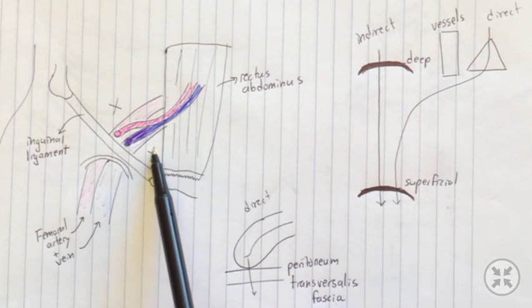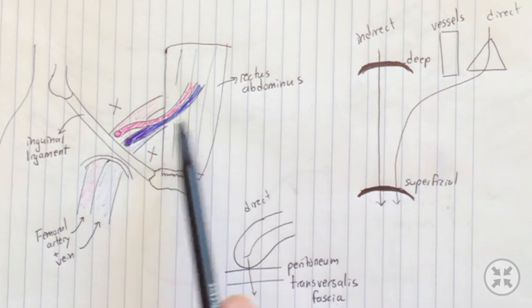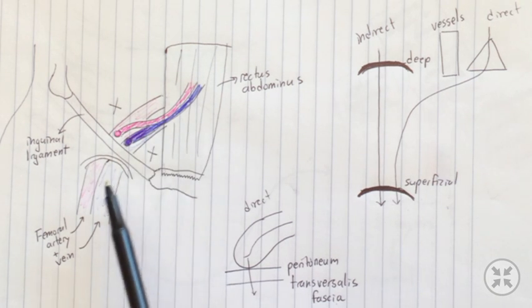A direct inguinal hernia will actually happen here in what is called Hesselbach's triangle, which is bordered by three different landmarks that form that triangle: the rectus abdominis, the inguinal ligament, and then these vessels here, the inferior epigastric vessels.